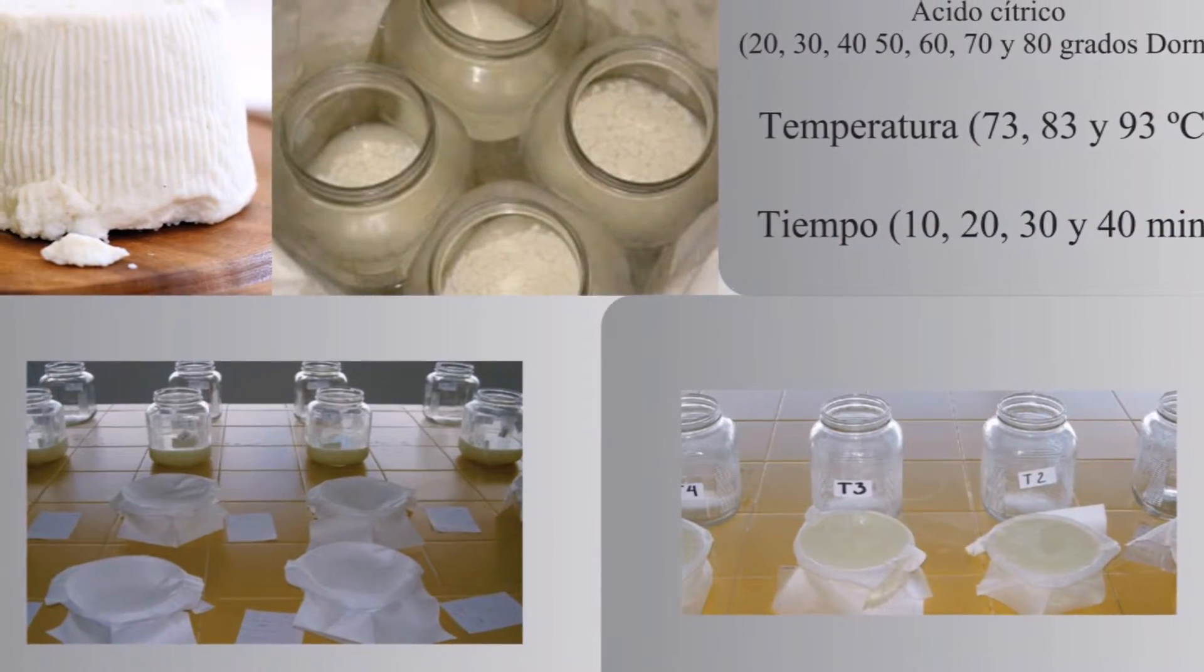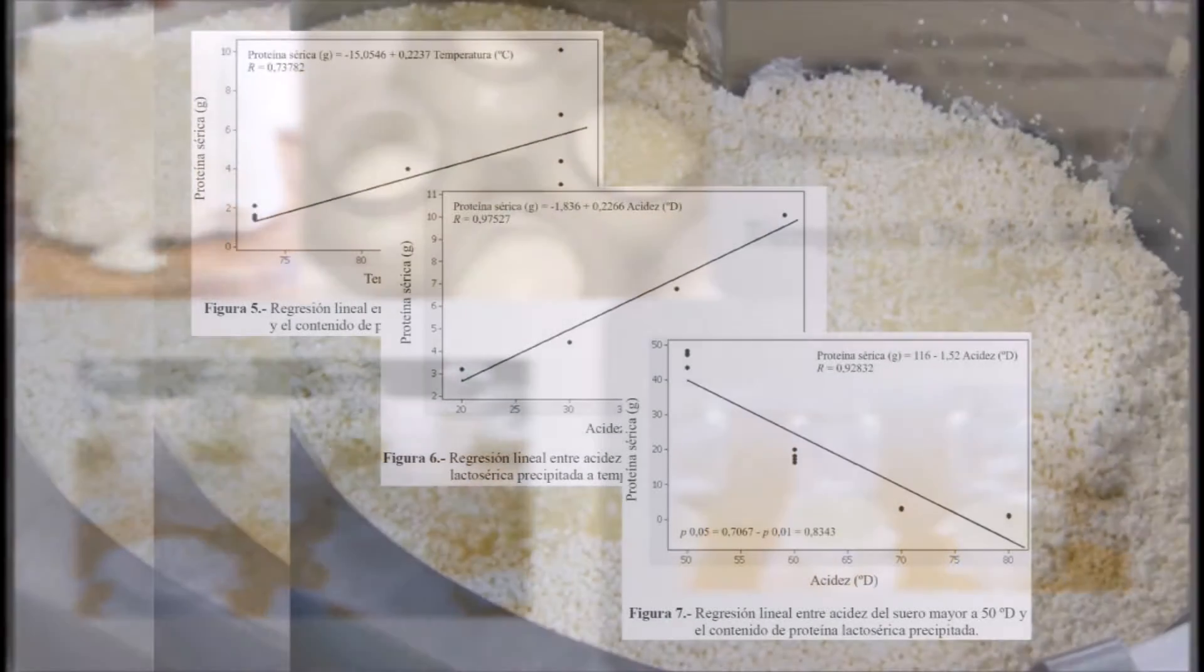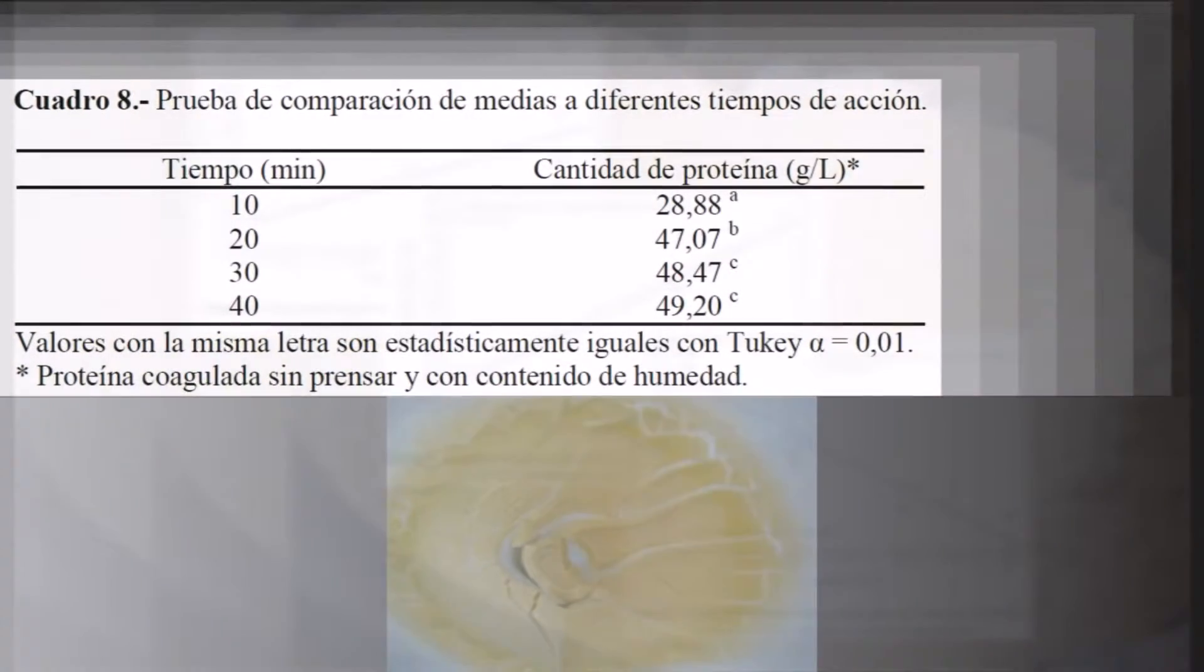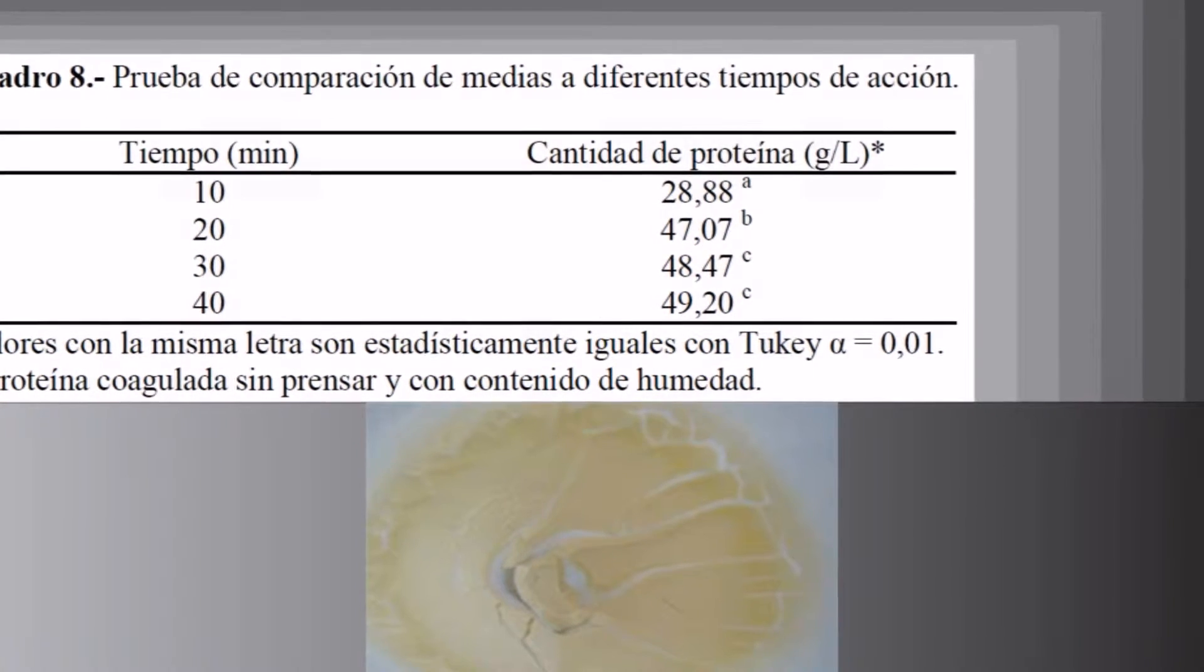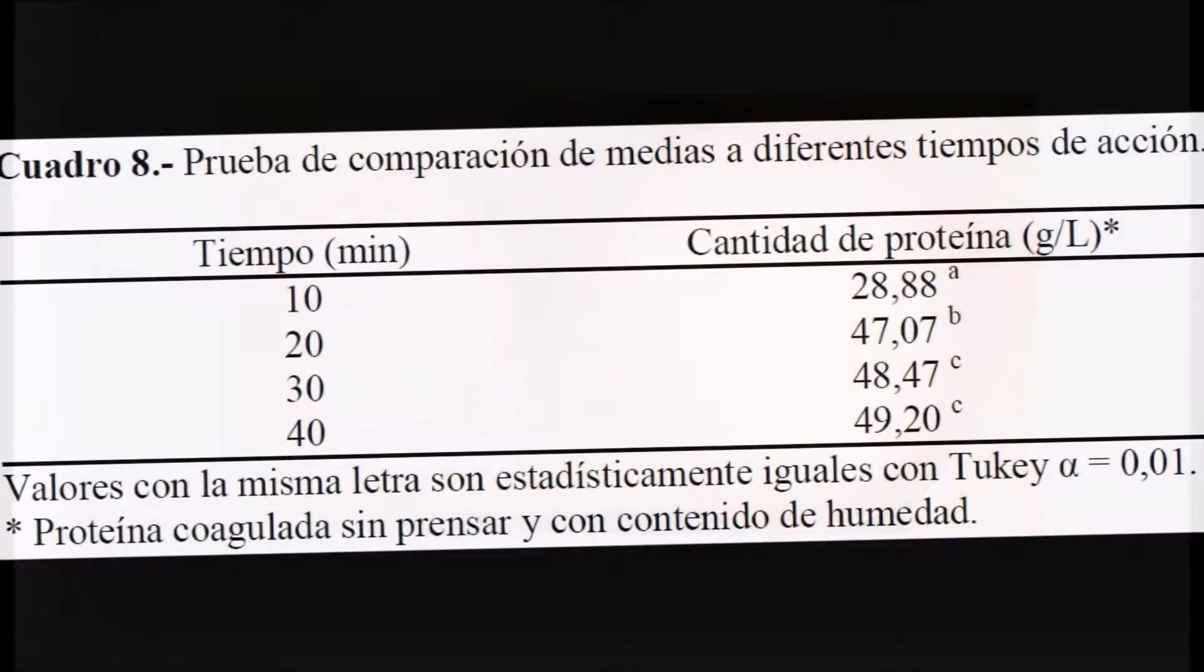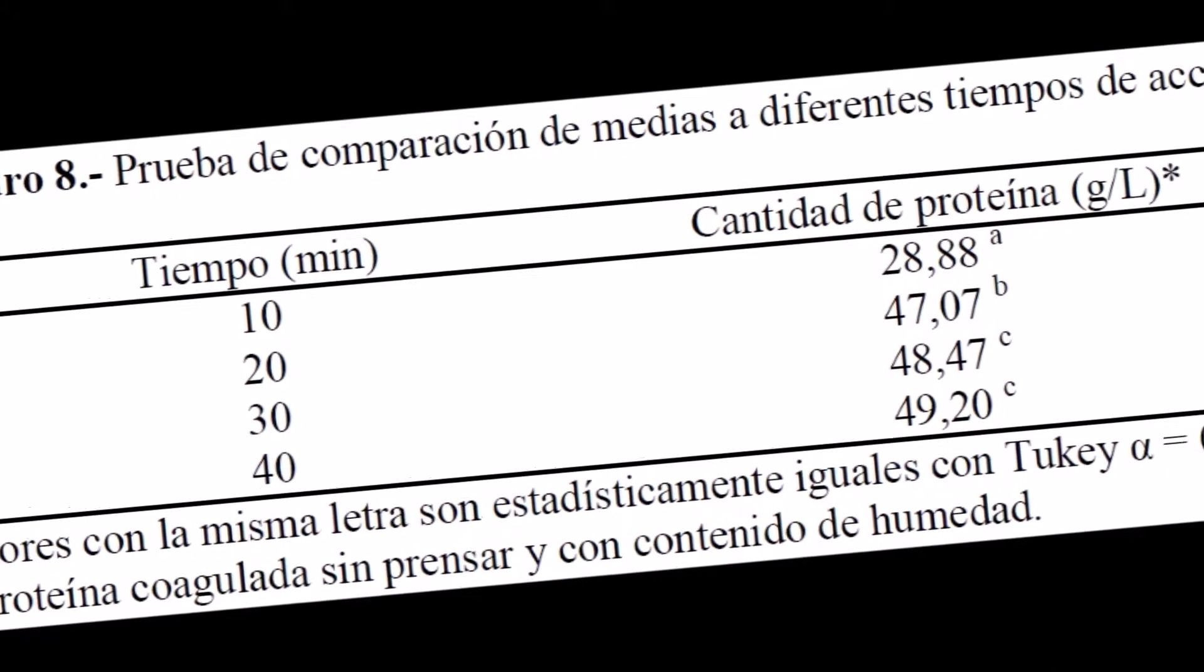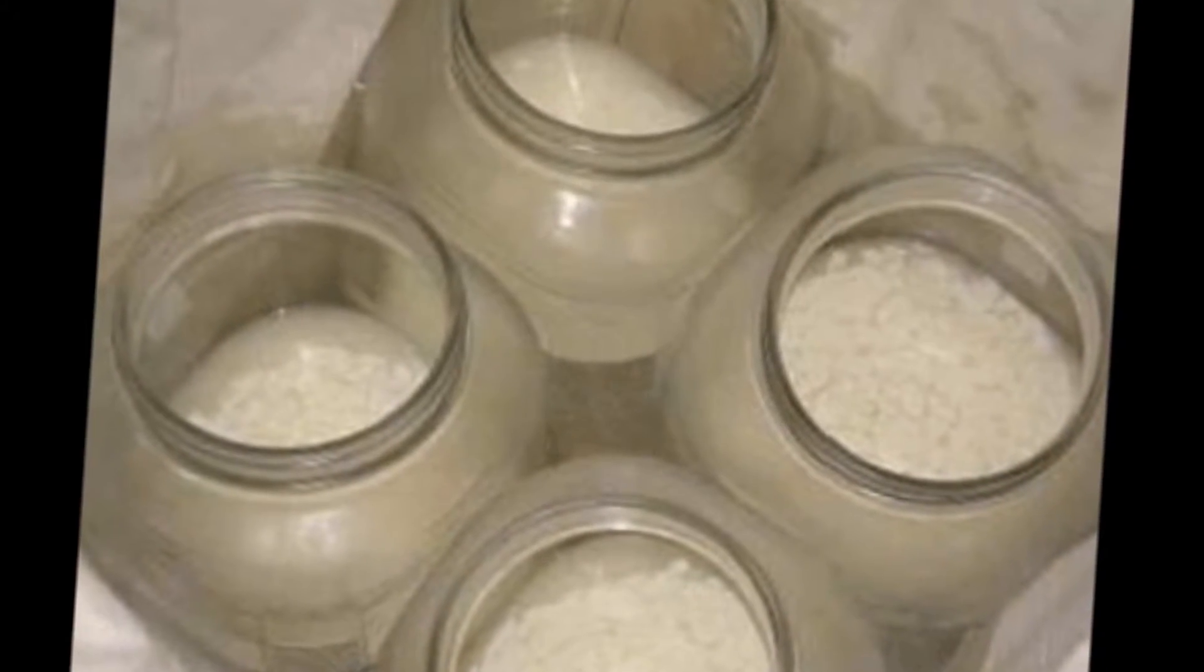The bovine whey is sometimes dismissed in the dairies for not offering economic benefit to their use for the production of ricotta cheese, becoming an environmental pollutant. This is due, in part, to the lack of best condition of temperature and time for precipitation of lactoalbumin proteins since no rectification of acidity occurs.